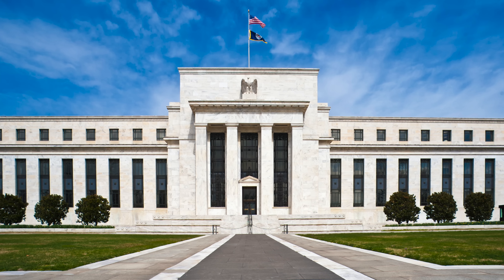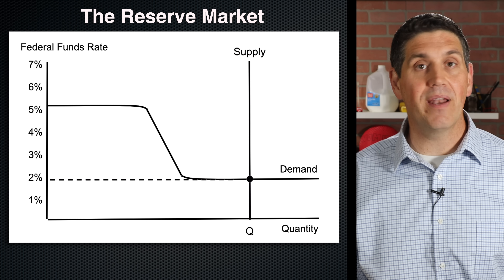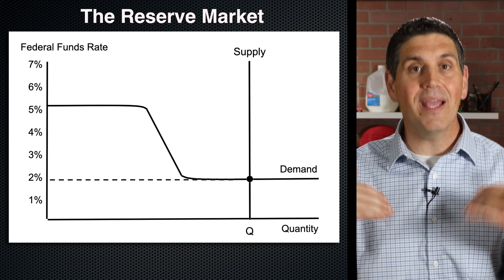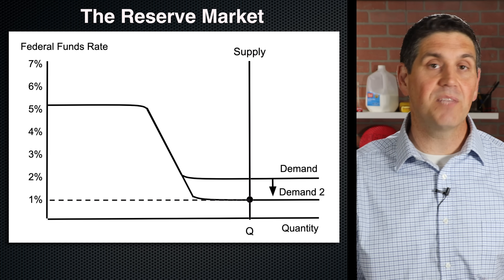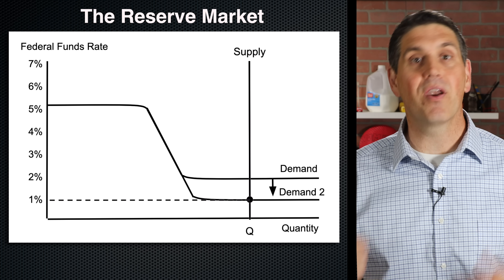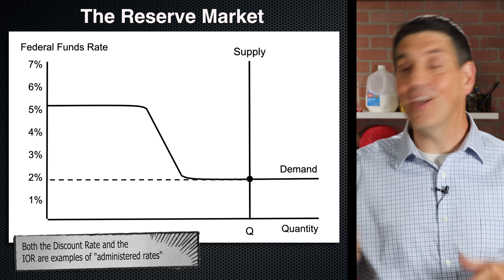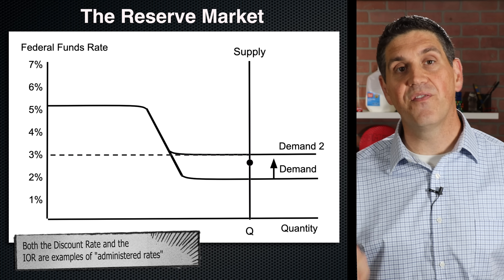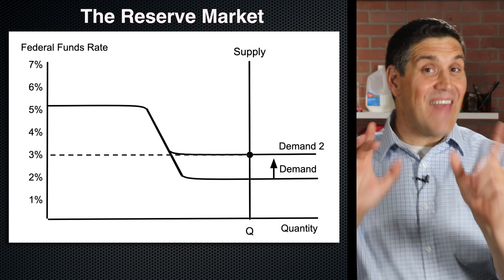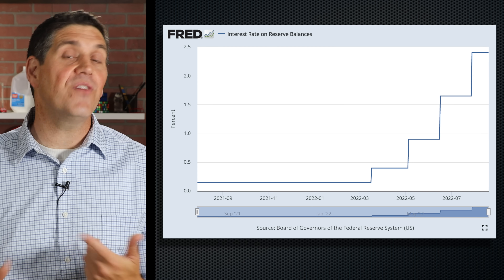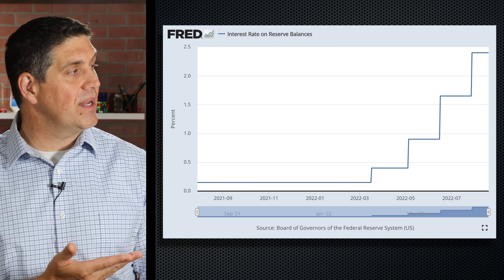So if those traditional tools of monetary policy don't work, how does the Federal Reserve do monetary policy today? They can change the interest on reserves. For example, let's say we have ample reserves and the federal funds rate is at 2%. If the central bank wants to lower interest rates to stimulate the economy, they can decrease the interest on reserves — that would lower interest rates, increase investment, increase aggregate demand. That's expansionary monetary policy. And if the Federal Reserve wants to slow down the economy, they could increase interest on reserves — that would increase the federal funds rate and interest rates across the board, decrease investment and consumer spending, and decrease aggregate demand. That is contractionary monetary policy, and it's exactly what the Fed is doing right now to fight inflation — they're increasing interest on reserves.